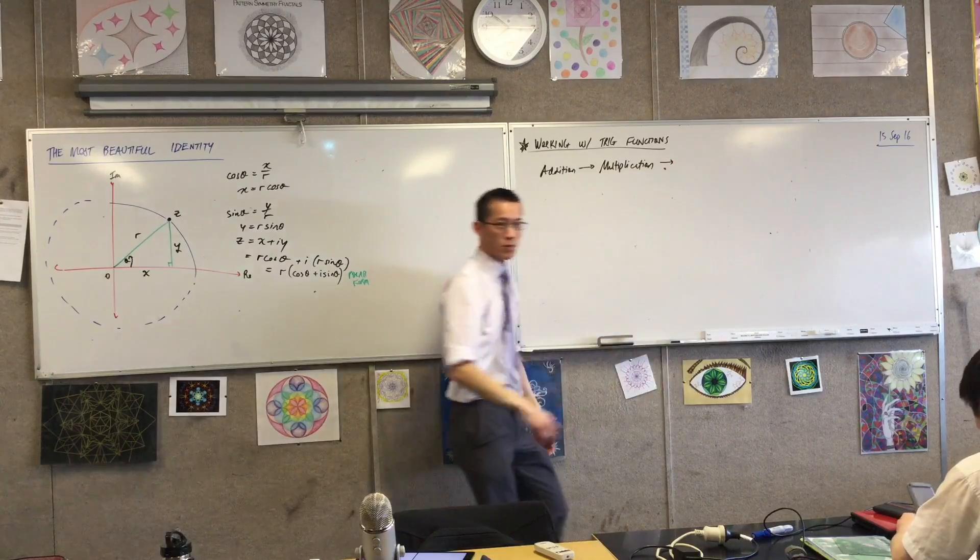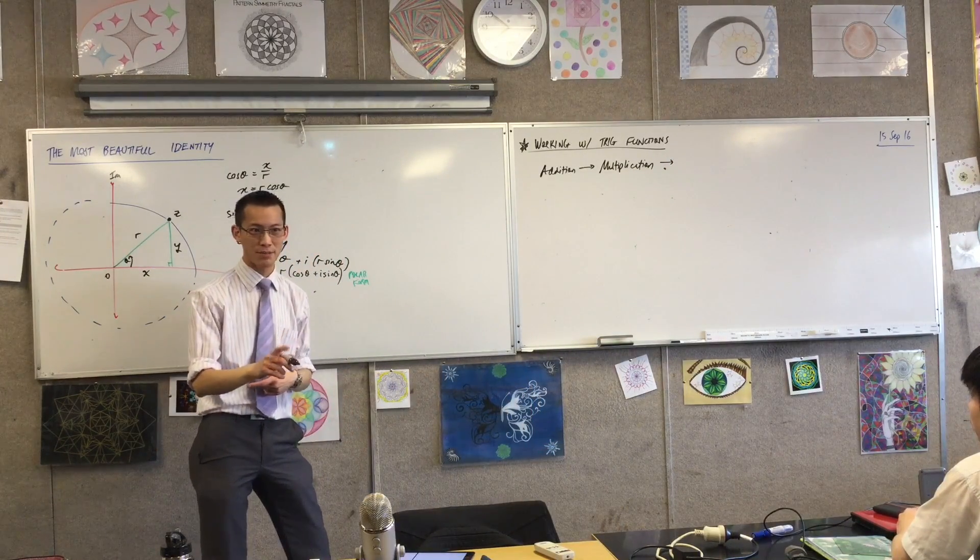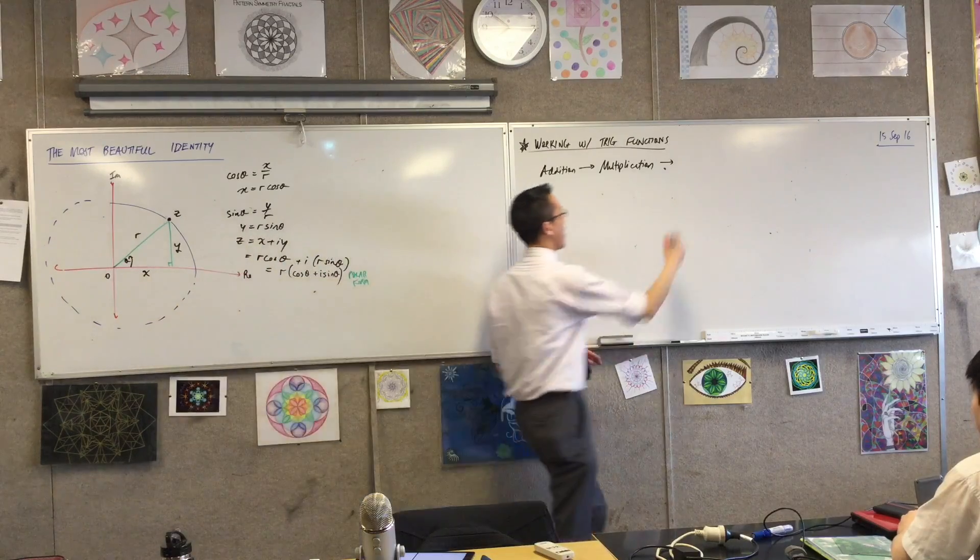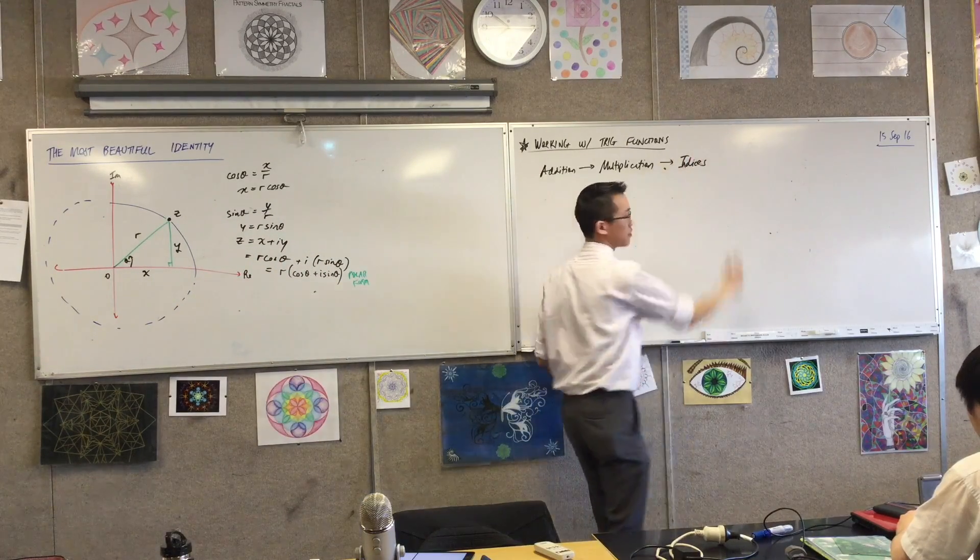If you've got multiplication, what happens when you've got this idea of repeated multiplication? Repeated multiplication. It's indices, right? Exponents, squaring. Indices, right?